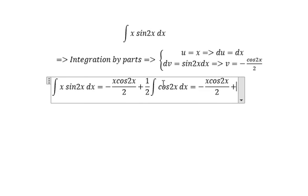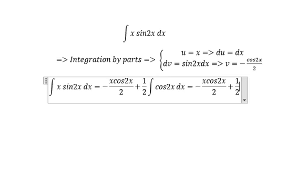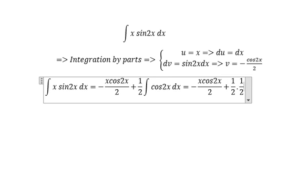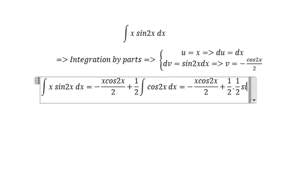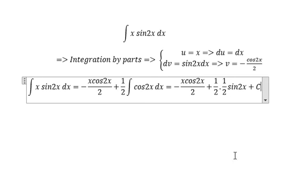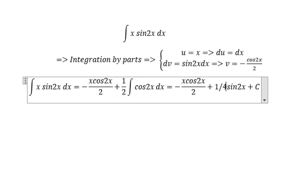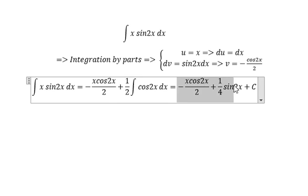The integral of cosine 2x is 1 over 2 sine 2x. So we have negative x cosine 2x over 2 plus 1 over 2 times 1 over 2 sine 2x plus C. That's 1 over 4 sine 2x. And this is the answer.